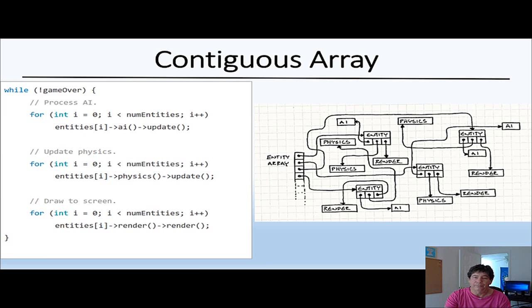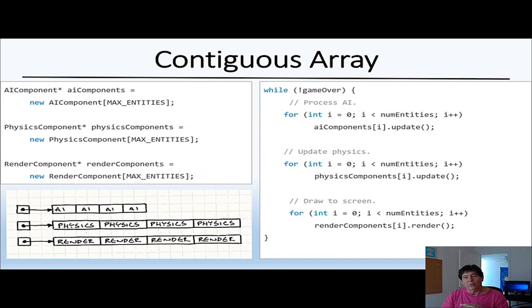But if you restructure the way you've allocated your memory and instead of creating the classes each of which has three different objects, instead now I have an AI component block that has all the AI components, all the physics components and all the render components, and they're in a contiguous block in memory.